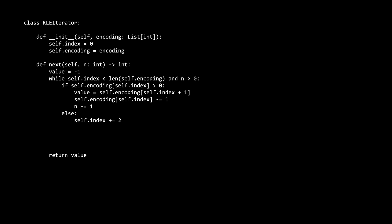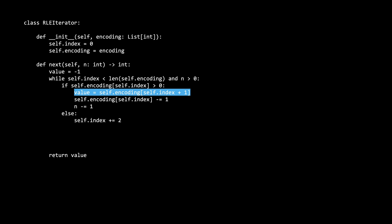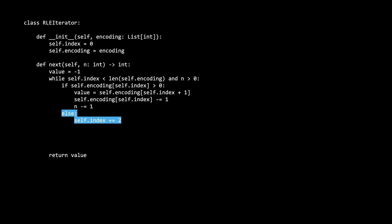For the next method, we initialize a variable called value, which is the value we ultimately return. While our index is less than the length of the encoding and n is greater than 0, we have two cases. If the current encoding is greater than 0, we set the value equal to the index plus 1 — remember that this plus 1 is because the first number in the pair is the frequency of a value and the second number is the value itself. Next, we decrement the frequency, which is self.encoding of self.index, symbolizing us consuming a number in the sequence. We also decrement n by 1 as a count. The else case happens when the frequency is not greater than 0, in other words it is 0. In that case, we need to move on to the next pair in the encoding by incrementing the index by 2.